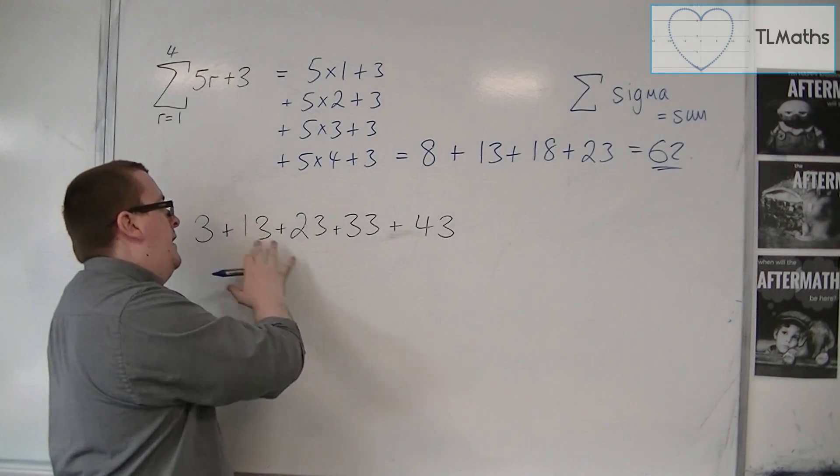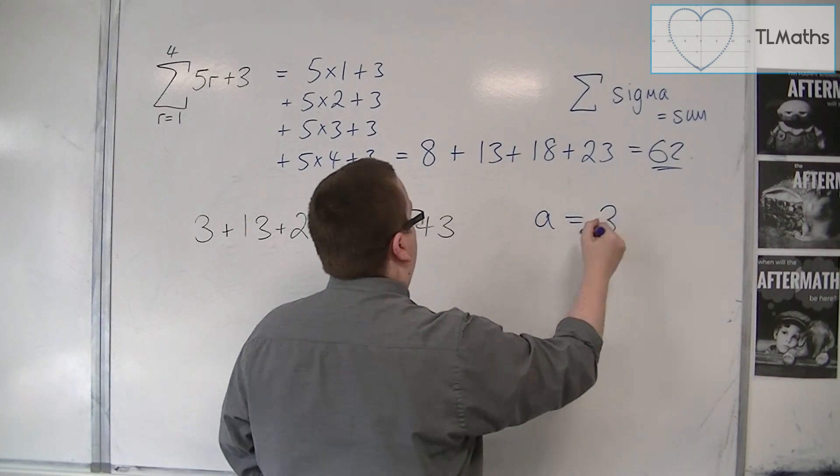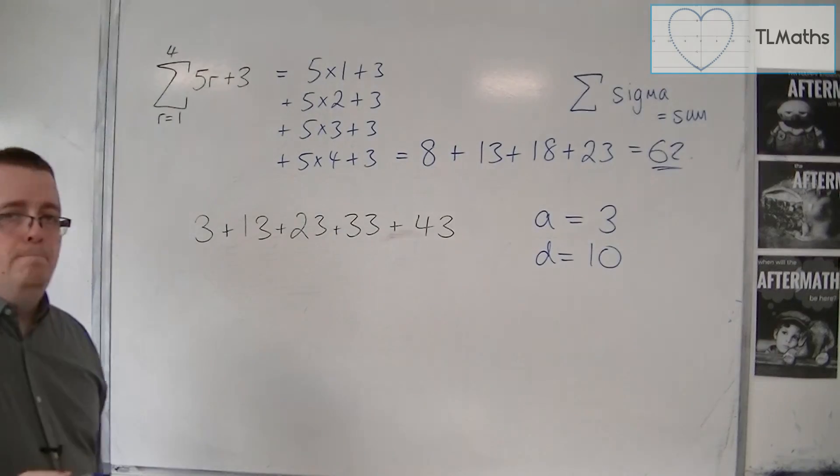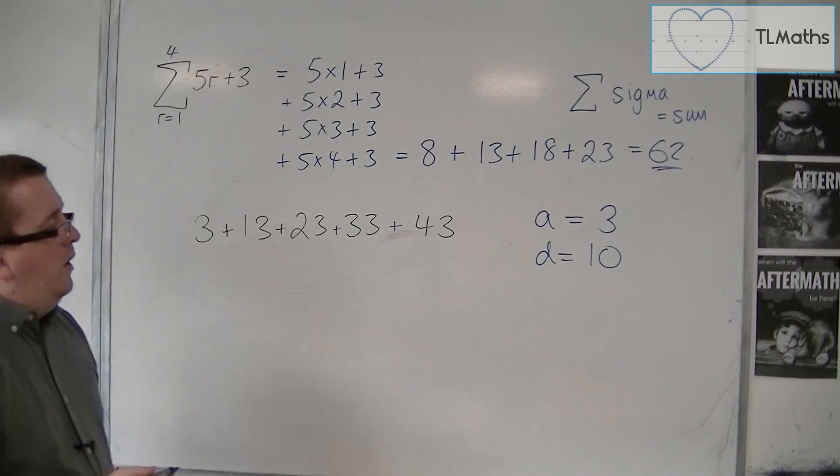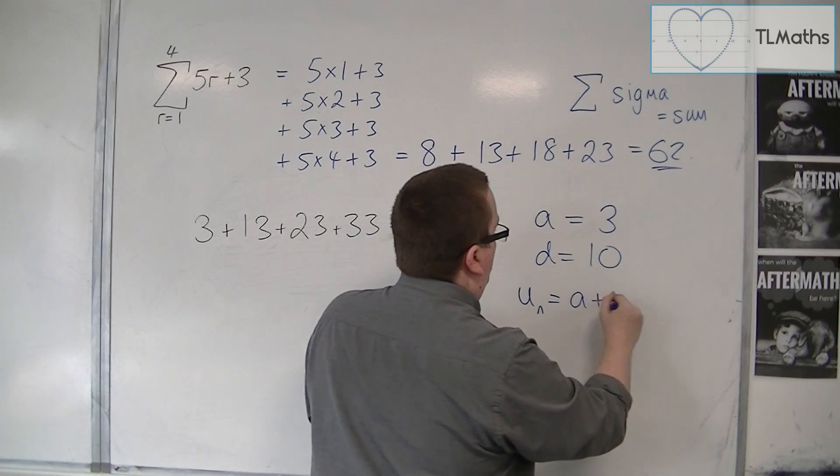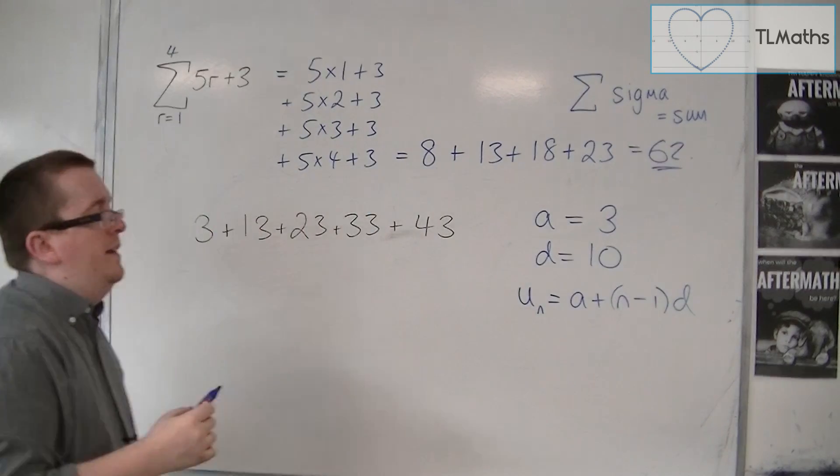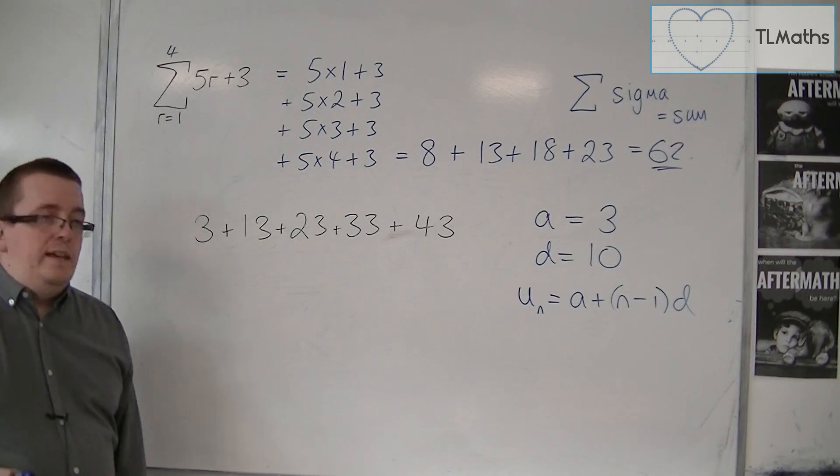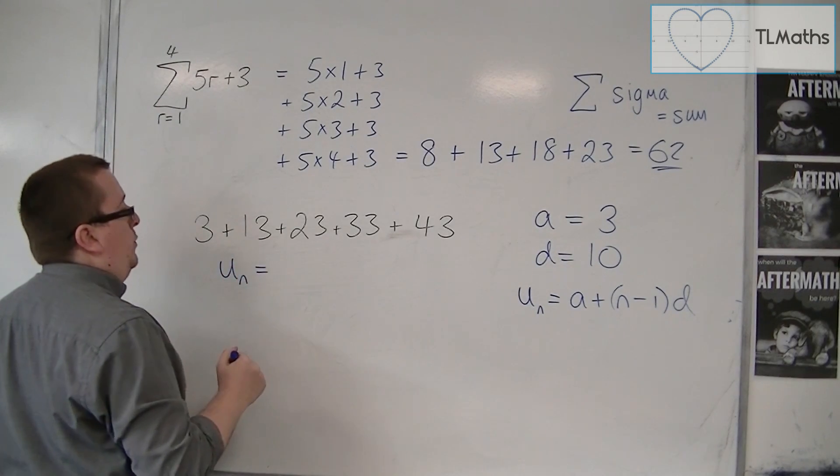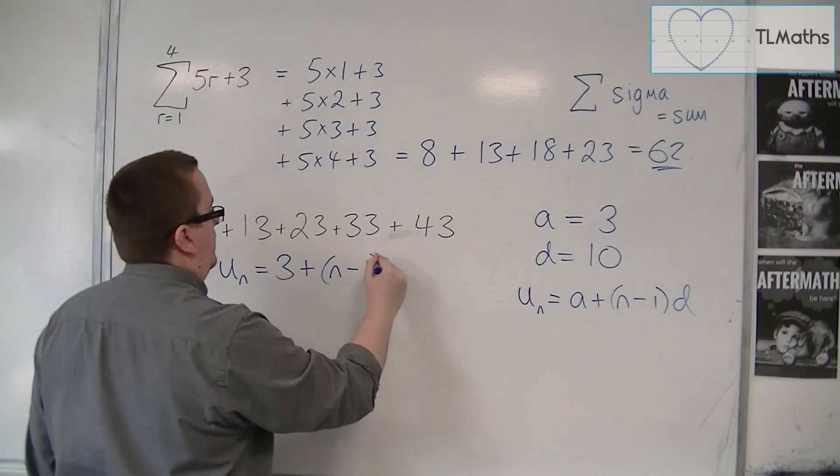So in doing that, I can evaluate a, which I know is 3, and the common difference is 10. So I can then find an nth term using the formula in the formula booklet. Given by un is a plus n minus 1, d. So un is equal to a plus n minus 1 times d.